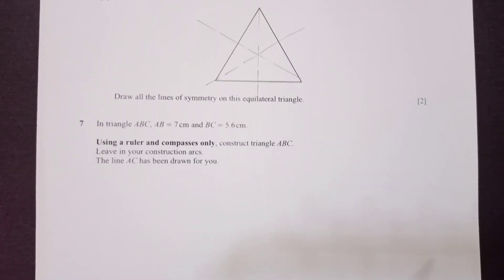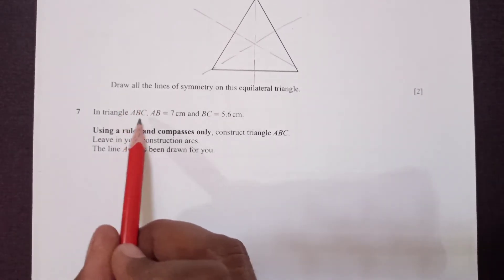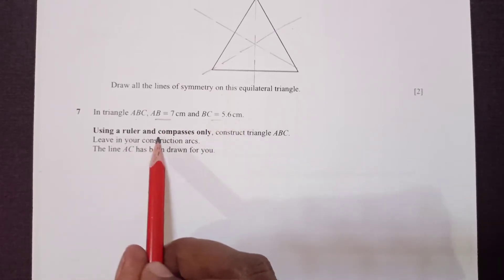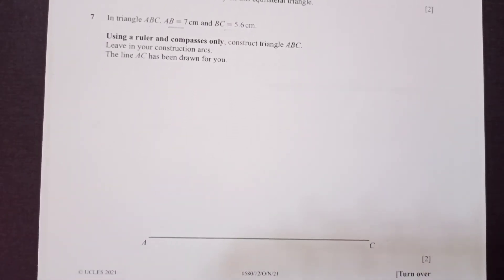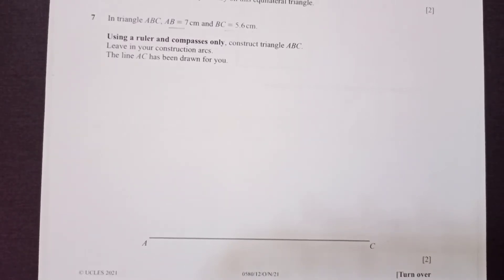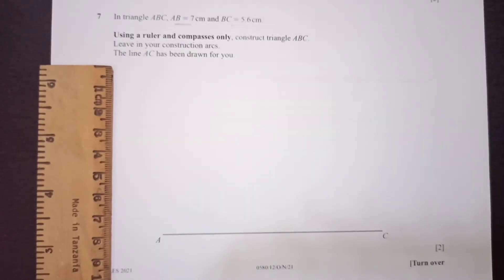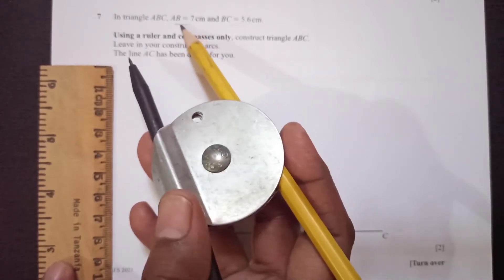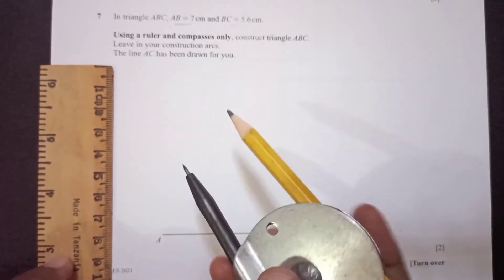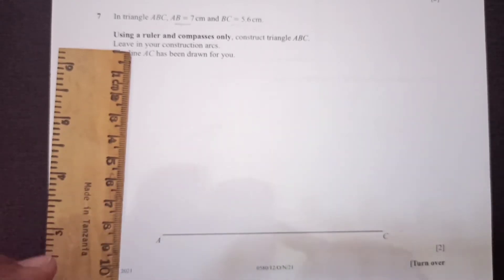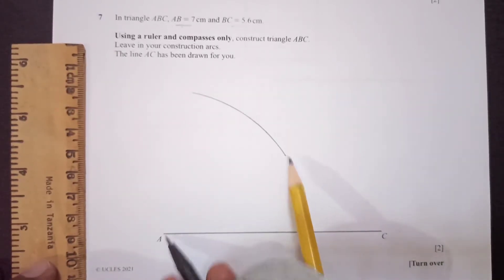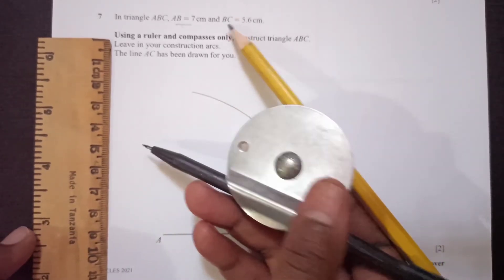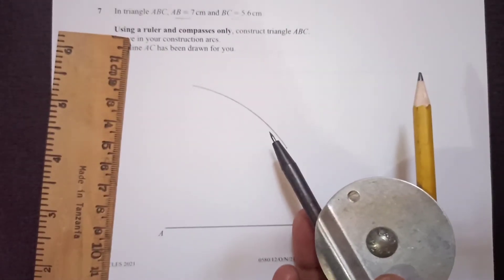Question 7: construct triangle ABC where AB is 7 cm and BC is 5.6 cm, using ruler and compass only — leave all construction arcs. We are given line AC. Open the compass to 7 centimetres and from point A draw an arc, because B is somewhere on that arc.